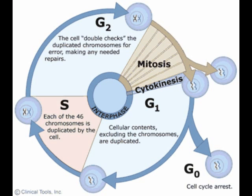Cell biologists name the G1 stage before DNA replication, and they name the stage after DNA replication G2. Protein synthesis is very much a part of these growth stages. During G1, the cell recovers from the previous division, then increases in size, doubles its organelles such as mitochondria and ribosomes, and accumulates material that will be used for DNA synthesis.